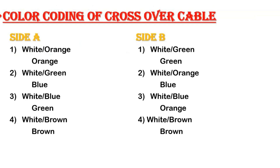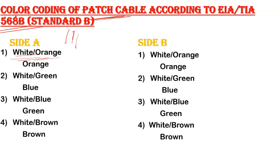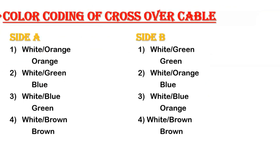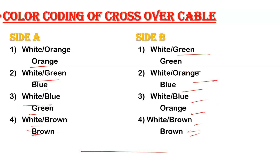For crossover cables, there is no separate concept for 568A or 568B — the crossover color coding is the same for both standards. Side A uses the 568B order: white-orange, orange, white-green, blue, white-blue, green, white-brown, brown. Side B uses the 568A order: white-green, green, white-orange, blue, white-blue, orange, white-brown, brown. Making one end like side A and the other like side B creates a crossover cable for similar devices.